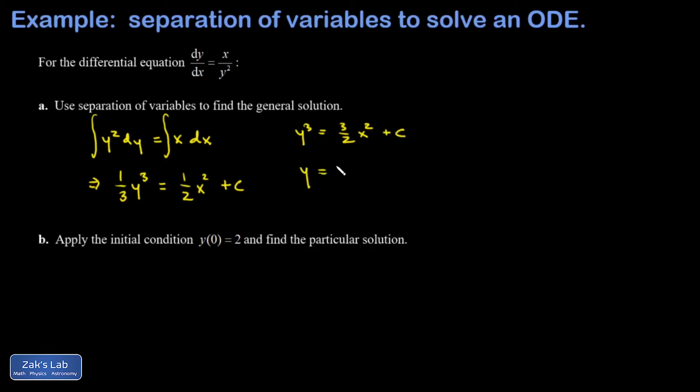Finally, I take the cube root and I've got my general solution. For a first-order differential equation, I expect my general solution to have one arbitrary constant in it, so this is good.